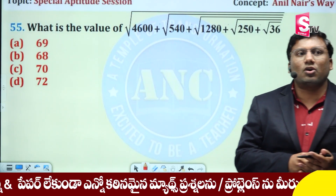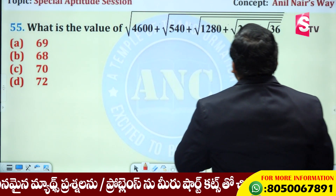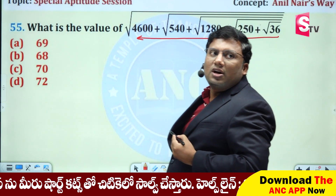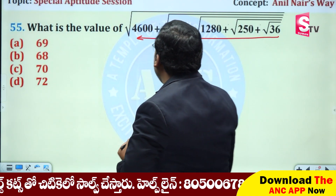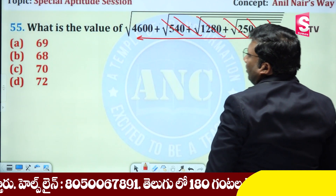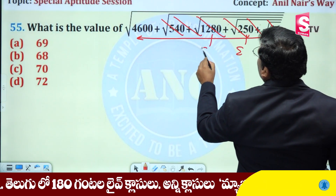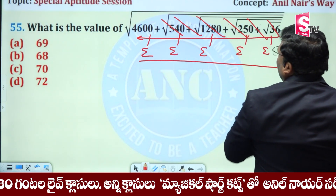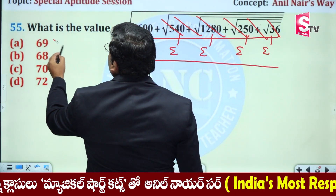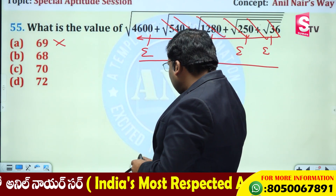What is the value of √4600 + √540 + √280? If you try to solve it the general way, you'll be here a long time. This is an even number problem. If you add even numbers, the answer will also be an even number. Note: 69 is an odd number.